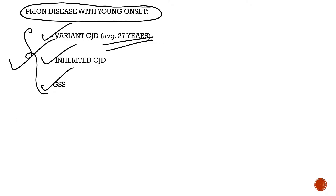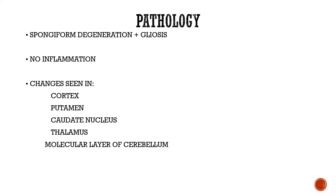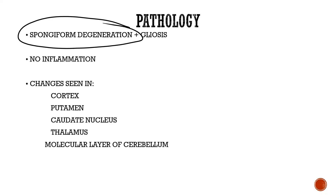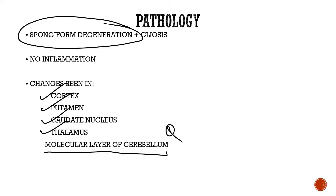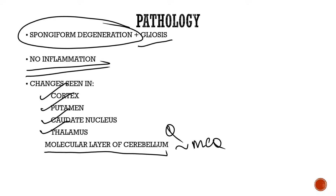The hallmark pathological feature of prion disease is spongiform degeneration, characterized by vacuole formation in the cortex, putamen, caudate nucleus, thalamus, and the molecular layer of the cerebellum. This is accompanied by astrocytic gliosis. Very importantly, there is absolutely no inflammation in the CNS.